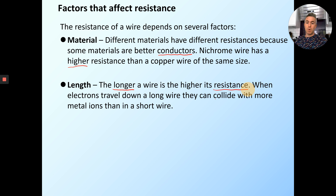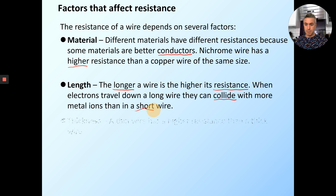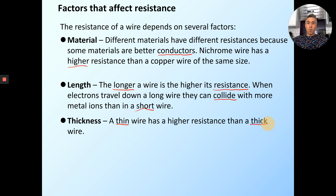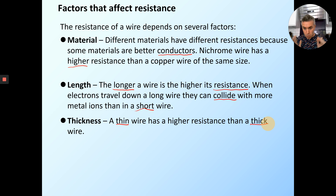When electrons travel down the wire, they collide with more metal ions than in a short wire. We talked about that in terms of walking down a corridor — if you have to walk all the way down a corridor full of people, you're much more likely to bump into people than if you just have to move a short way. A thin wire has a higher resistance than a thick wire. If you're walking down a narrow corridor, you can only fit two people side by side — it's much harder than a wide corridor that can fit ten people wide.